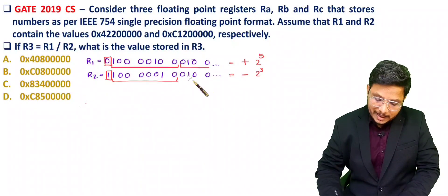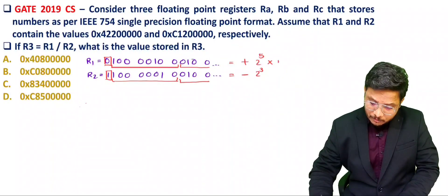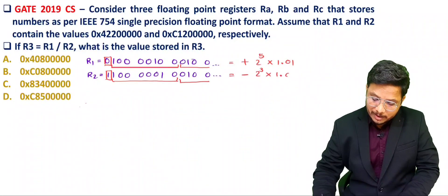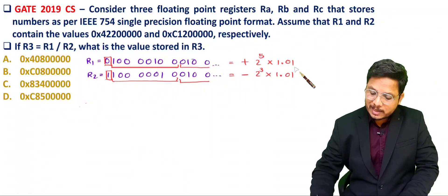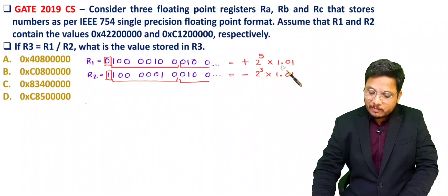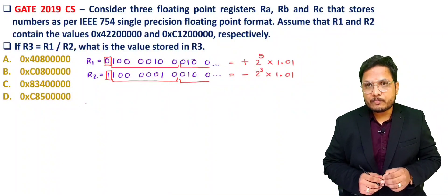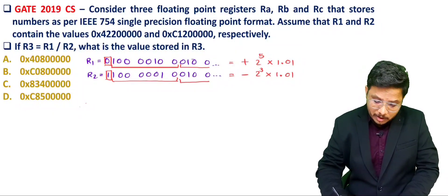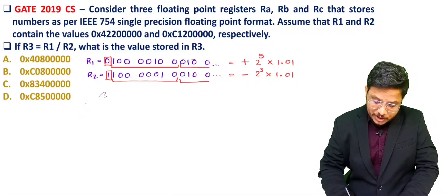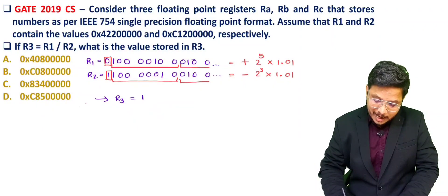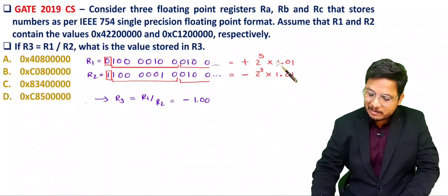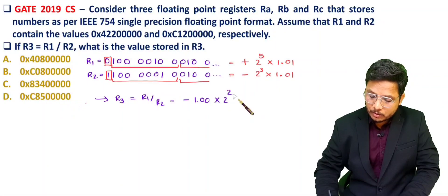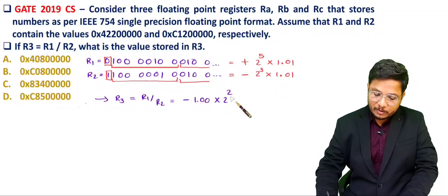The remaining bits give mantissa. For both R1 and R2 the mantissa is 1.01. Since R3 equals R1 divided by R2, the result is negative (positive divided by negative), the mantissas 1.01 divided by 1.01 cancel giving 1.00, and 2 to the power 5 divided by 2 to the power 3 gives 2 to the power 2. So R3 equals negative 1.00 times 2 to the power 2.